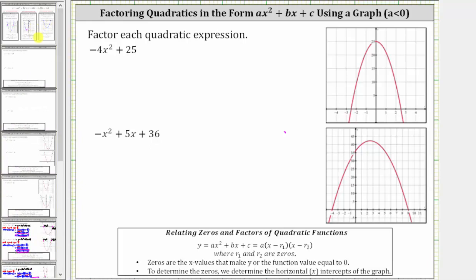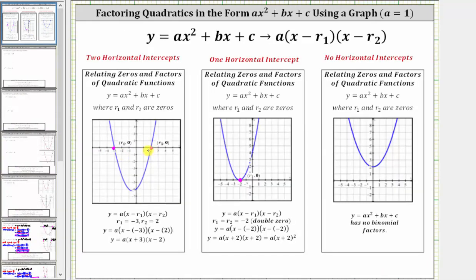We can have two distinct horizontal intercepts, which gives us two distinct binomial factors. Or we can have a single horizontal intercept where the graph touches the horizontal axis and bounces back — this gives us a double zero, where r sub one and r sub two are equal, giving us two of the same binomial factors. And if there are no horizontal intercepts, there are no binomial factors.